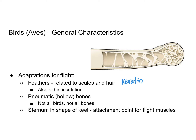Birds also have hollow bones called pneumatic bones. You can see in this picture that the pneumatic bone has a lot of spaces in it, and this helps to lighten the bones, reducing the weight the bird has to carry while flying.